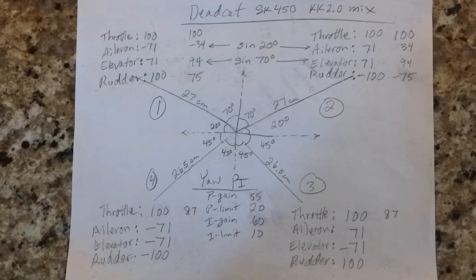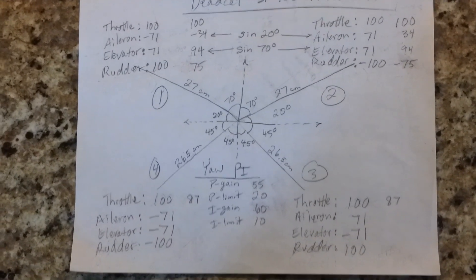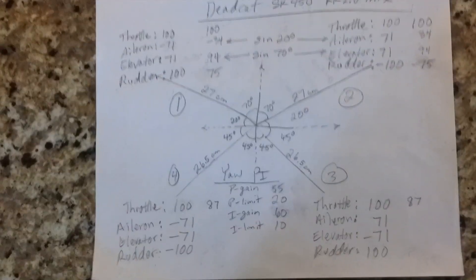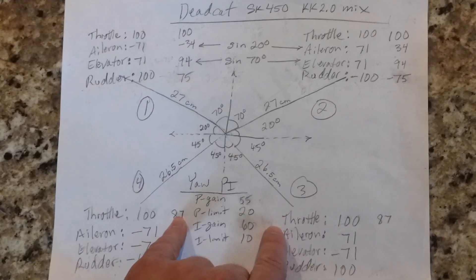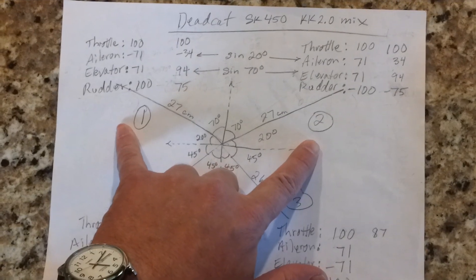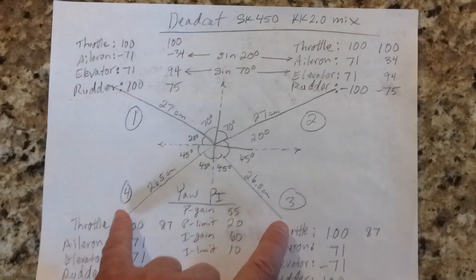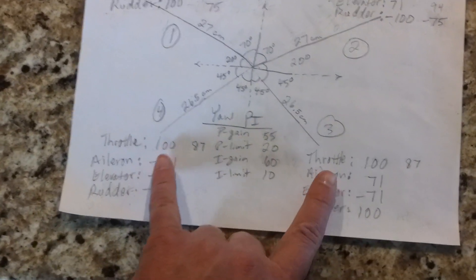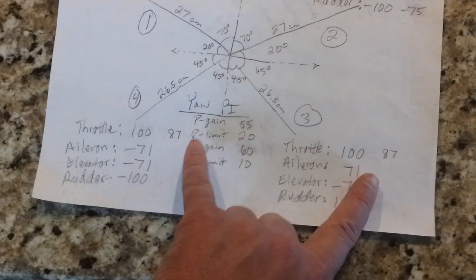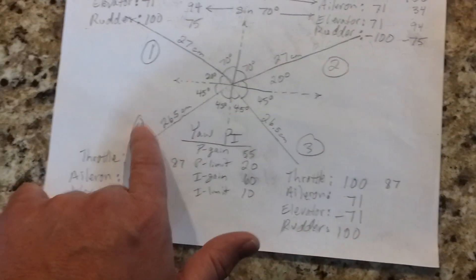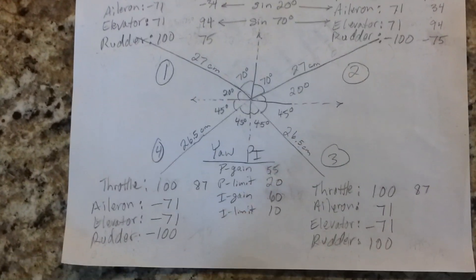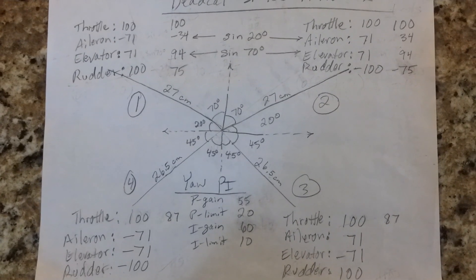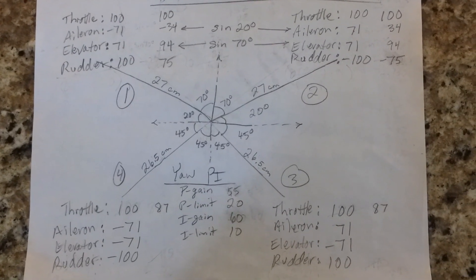The last change is the throttle adjustment. The dead cat wants to pitch forward if you accelerate quickly because the rear two motors are angled back at 70 degrees. So I reduced the throttle mixing on the rear two motors and found that 87 and 87 on motors three and four was just right. With these adjustments, the dead cat flies just as good as a standard X SK450.